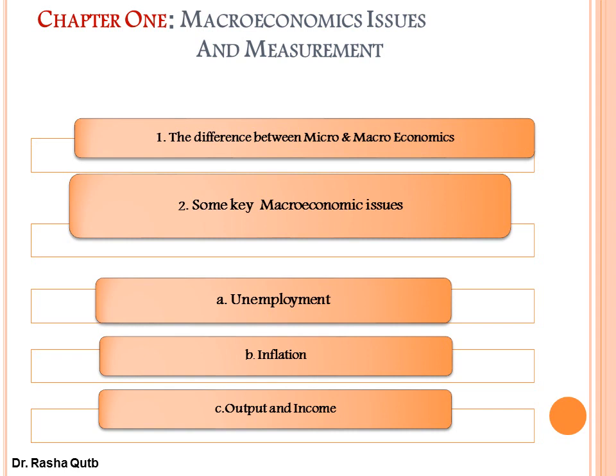In part one we will take two chapters. Chapter one is about macroeconomic issues and measurement, and chapter two is talking about aggregate output and national income in the short run. First, in chapter one, we will cover the difference between micro and macroeconomics. Microeconomics is the branch of economics which we studied in the first semester.